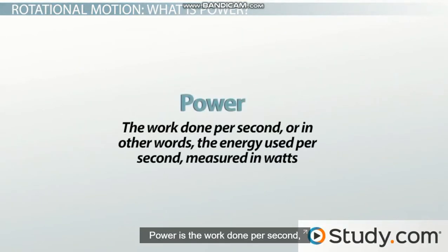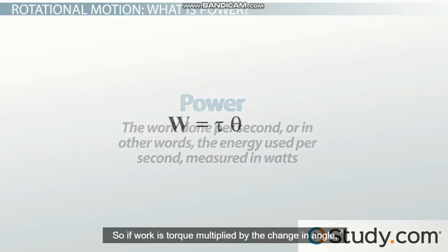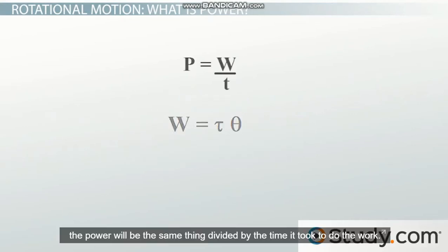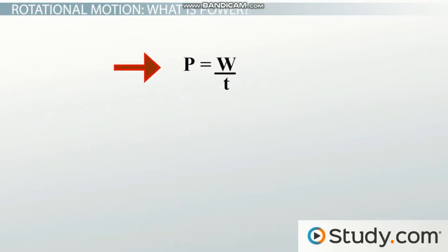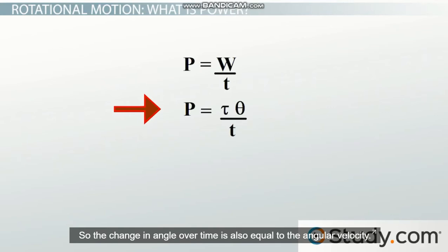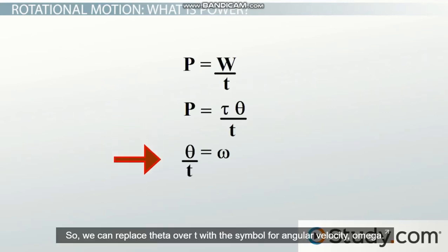Power is the work done per second, or in other words, the energy used per second, measured in watts. So if work is torque multiplied by the changing angle, the power will be the same thing divided by the time it took to do the work. Distance over time is velocity. So the change in angle over time is also equal to the angular velocity. So we can replace theta over t with the symbol for angular velocity, omega.